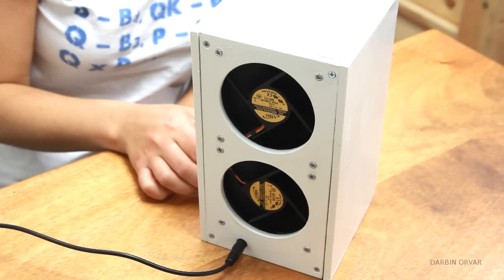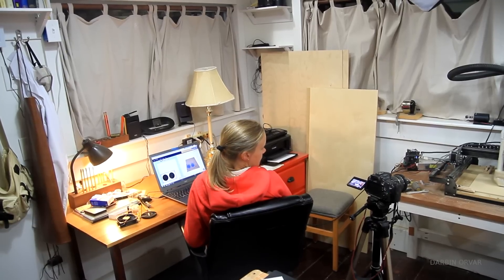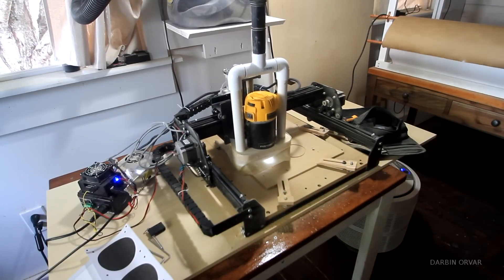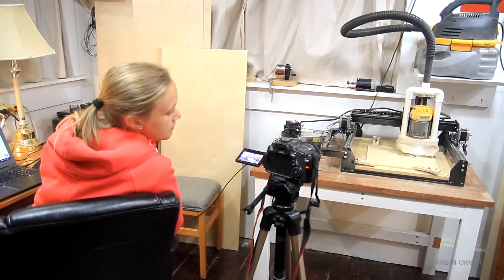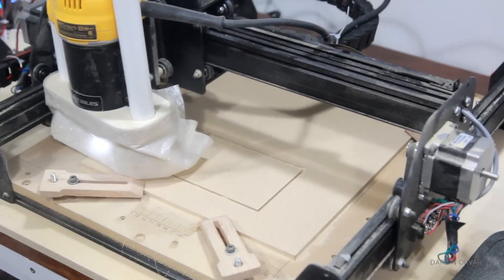So now it's simply a matter of enclosing all these parts in a neat little package. Now I decided to use MDF for the box, and here you can see I'm using the X-carve, which is a CNC machine, to cut out the parts. I have an Easel file in the description, ready to use if someone else wants to do this too.